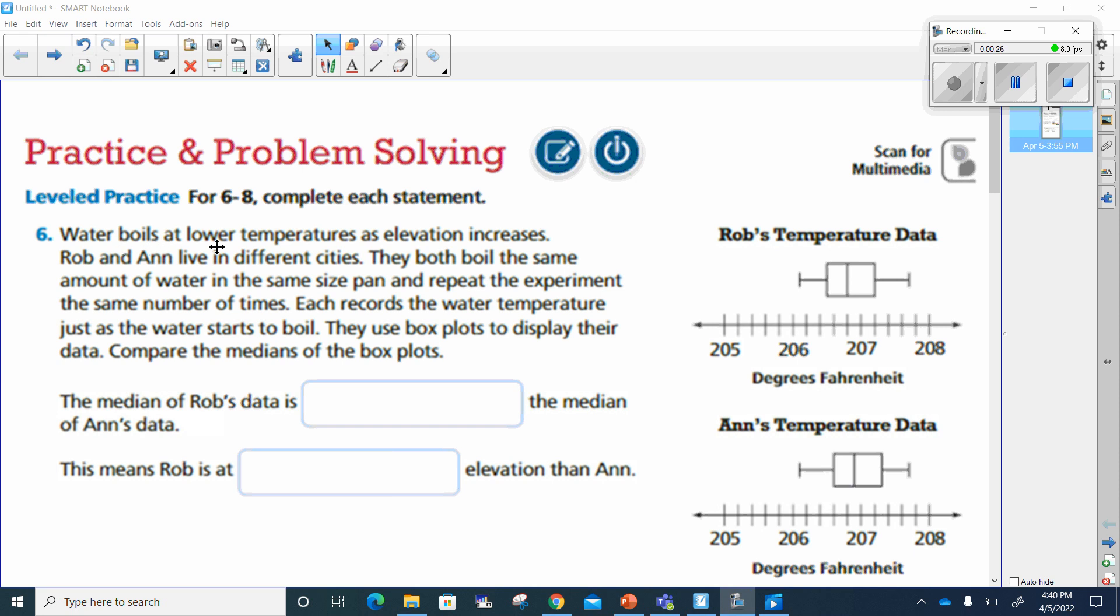Okay, Rob and Ann live in different cities. They both boil the same amount of water in the same size pan and repeat the experiment the same number of times. Each records the water temperature just as the water starts to boil. They use box plots to display their data, compare the medians of the box plots.